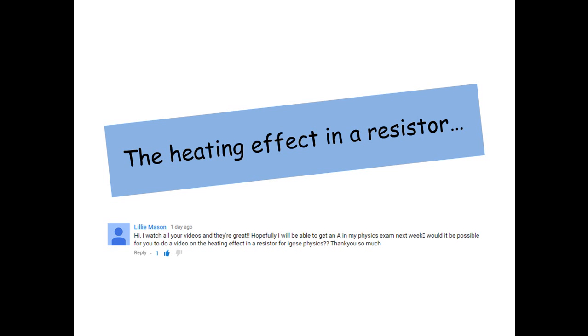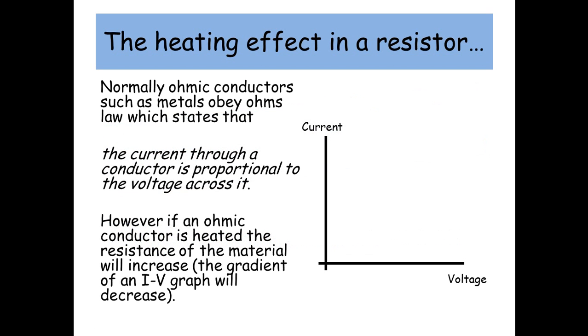Okay Lily, here it is. The heating effect in a resistor. Normally, ohmic conductors such as metals obey Ohm's law, which states that the current through a conductor is proportional to the voltage across it. However, if an ohmic conductor is heated, the resistance of the metal will increase and the gradient of an IV graph will decrease.